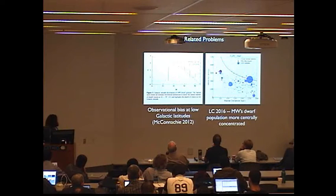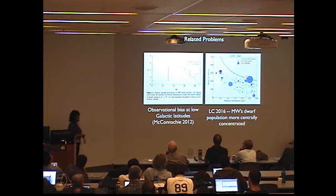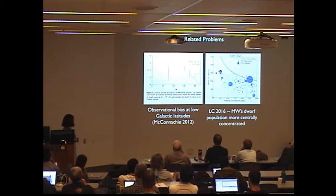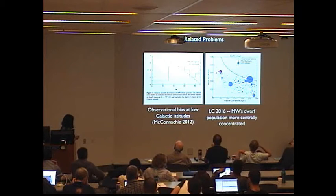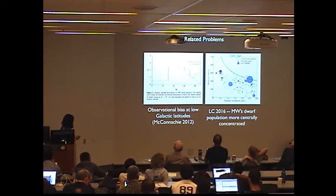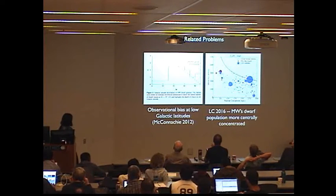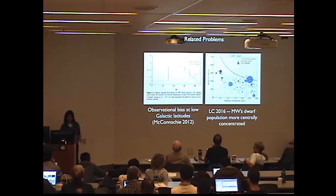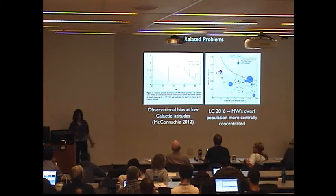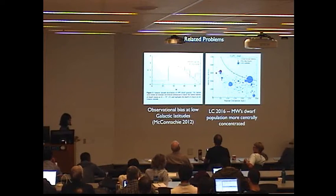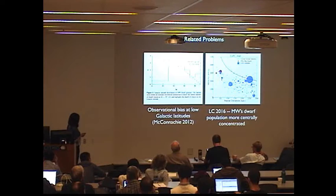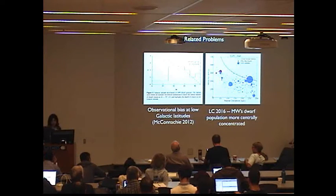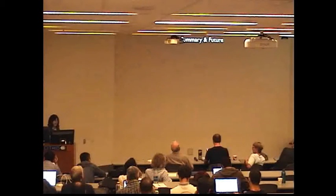Let me mention two related problems. There is a very significant observation bias at low latitudes. This is a figure from McConnachie's 2012 paper. The number of known satellites is a function of galactic latitude, and you see that at latitudes less than 30 degrees, we know of only one. We expect of order 10. So, I would really urge those of you who are involved with WFIRST to try and study galactic structure in more depth at low latitudes. The second problem, and this has been highlighted by a number of people including Andrè, is that the Milky Way's dwarf population is much more centrally concentrated than cosmological simulations.